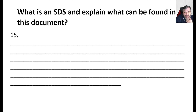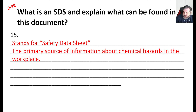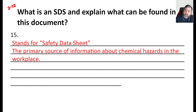What is an SDS? Explain what can be found in the document. This is a safety data sheet. It used to be called an MSDS — material safety data sheet — but now it's just SDS. It's the primary source of information about chemical hazards in the workplace. It tells you about the chemicals, what to do if you got exposed, how to clean them up if there's a spill, and gives basic information for identifying them and things to be aware of.